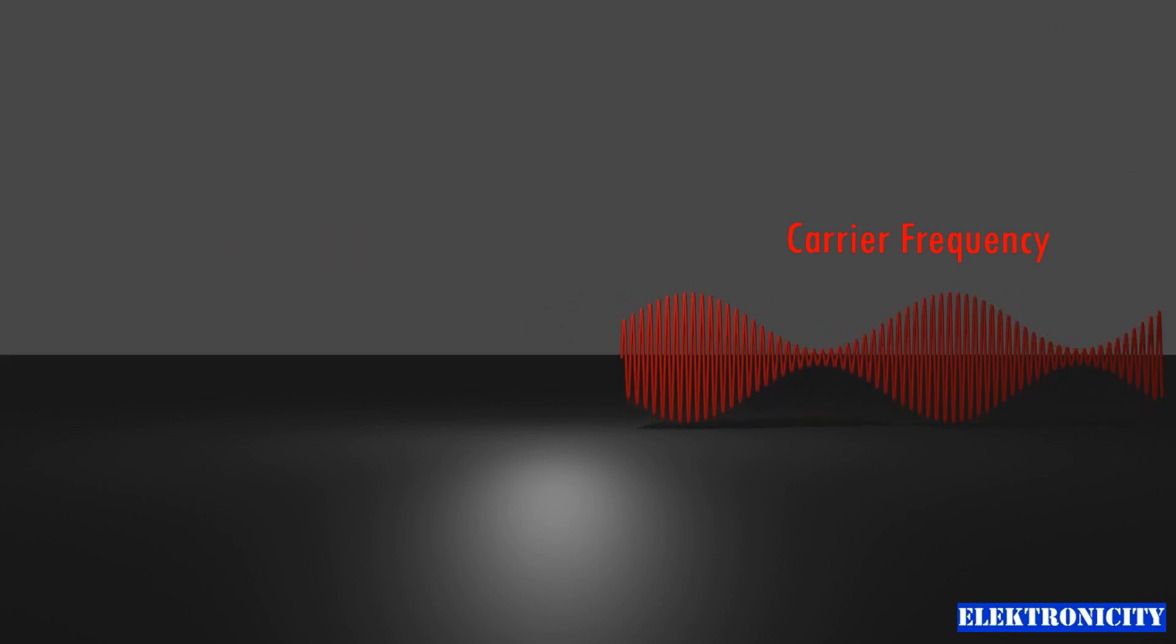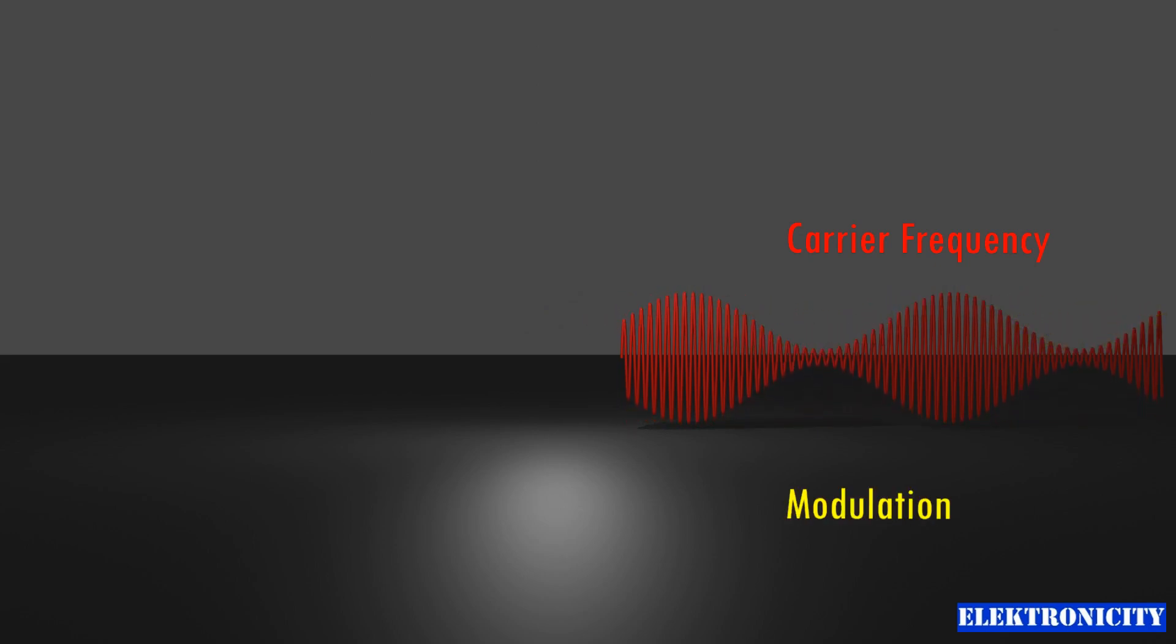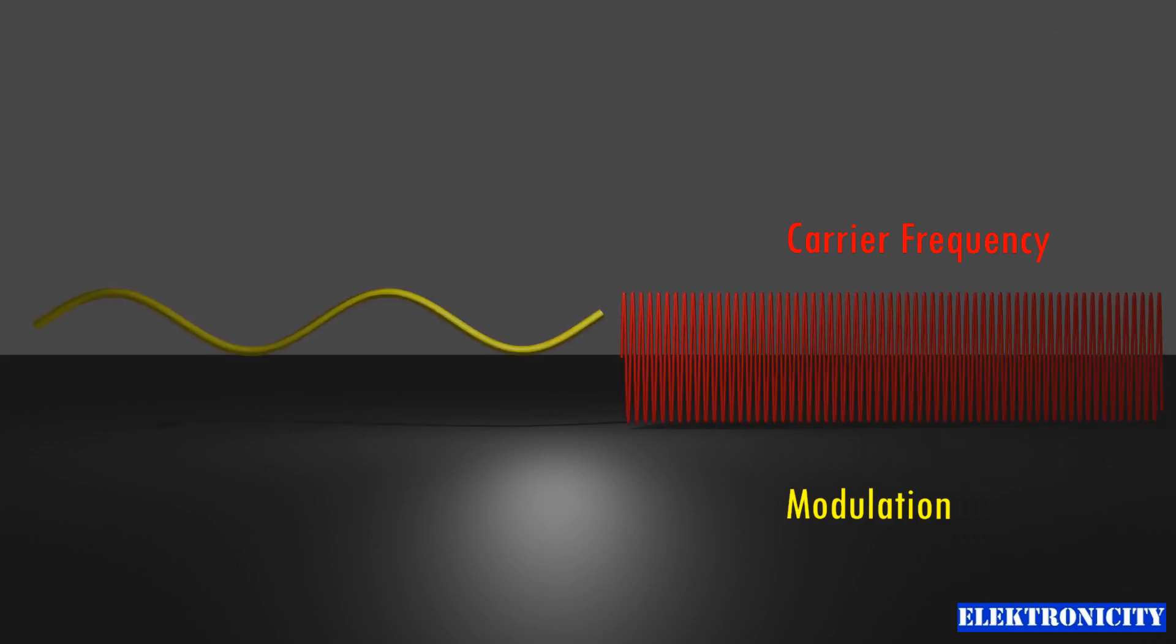This process of embedding a low frequency information signal onto a high frequency carrier is called modulation. In the example shown, the superimposed audio signal changes the amplitude of the carrier signal. Therefore, this kind of modulation is known as amplitude modulation.